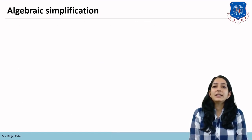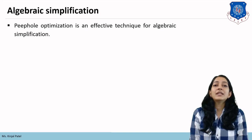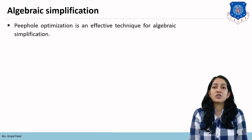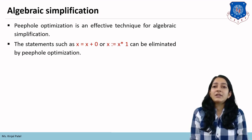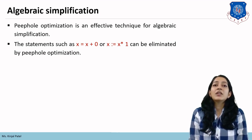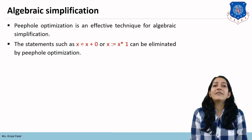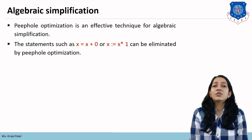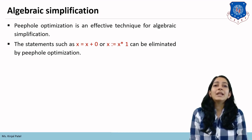The third technique is algebraic simplification. Peephole optimization is an effective technique for algebraic simplification. For example, if the statement is 'x = x + 0', that statement can be eliminated because the evaluation of that expression will not change the result value of x. Same way, 'x = x * 1' — the result will not change the value of x. So we can eliminate this type of algebraic expression using peephole optimization.